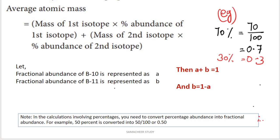The unknown values are A and B. For example, if the first isotope percentage abundance is 70, then 70 divided by 100 equals 0.7 — that is called fractional abundance. Since 70 plus 30 equals 100%, the fractions are 0.7 plus 0.3 equal to 1. So fractional abundances always sum to 1.